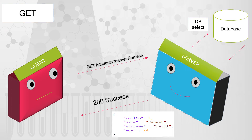Along with the 200 response, the server also sends the resource back — in this case the employee or student record. GET is idempotent because, unless there is any change on the server side due to POST or another call, irrespective of how many times you make the GET call, every time you will get the 200 response and the same payload back, since GET does not alter the resource on the server side.